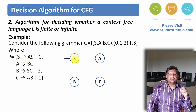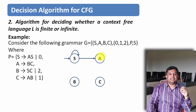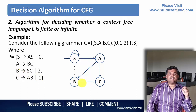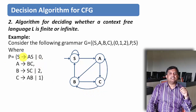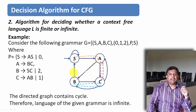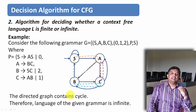S derives A and S, so from S there is an edge to S as well as to A. The next production A derives BC gives a directed edge from A to B as well as to C. The next production B derives SC gives a directed edge from B to S and from B to C. And C derives AB gives a directed edge from C to A as well as to B. Now you can see from S to A to B to S there is a cycle, and from A to C there is a cycle. So in this directed graph it contains cycles, and therefore the language of the given grammar is infinite.